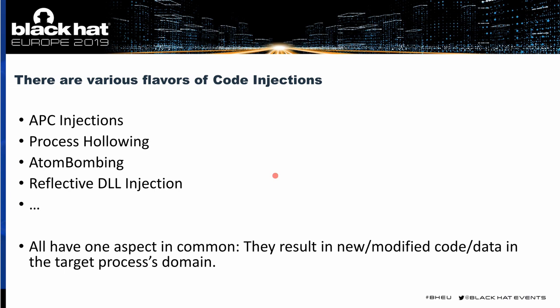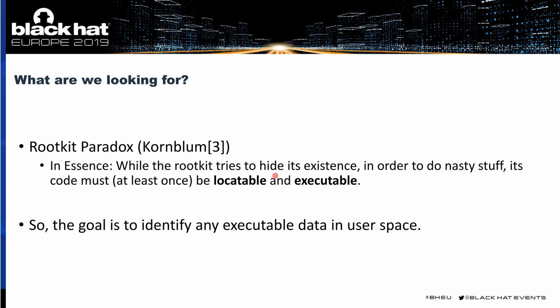Let's talk about how we can detect those techniques. One aspect that all investigated techniques have in common is that they all result in new or modified code or data in the target's process domain — so there should be some data we can find. By using the rootkit paradox by Jesse Kornblum, which translates to: while the rootkit tries to hide its existence, its code must at least once be locatable and executable. So there must be something executable by the CPU, and our goal is to identify any executable page in user space.